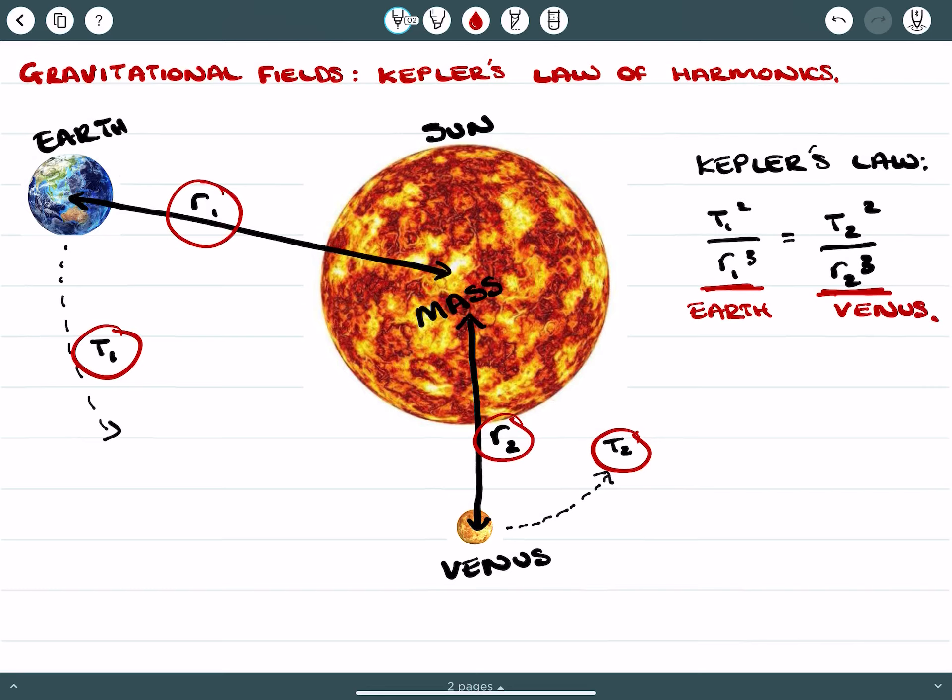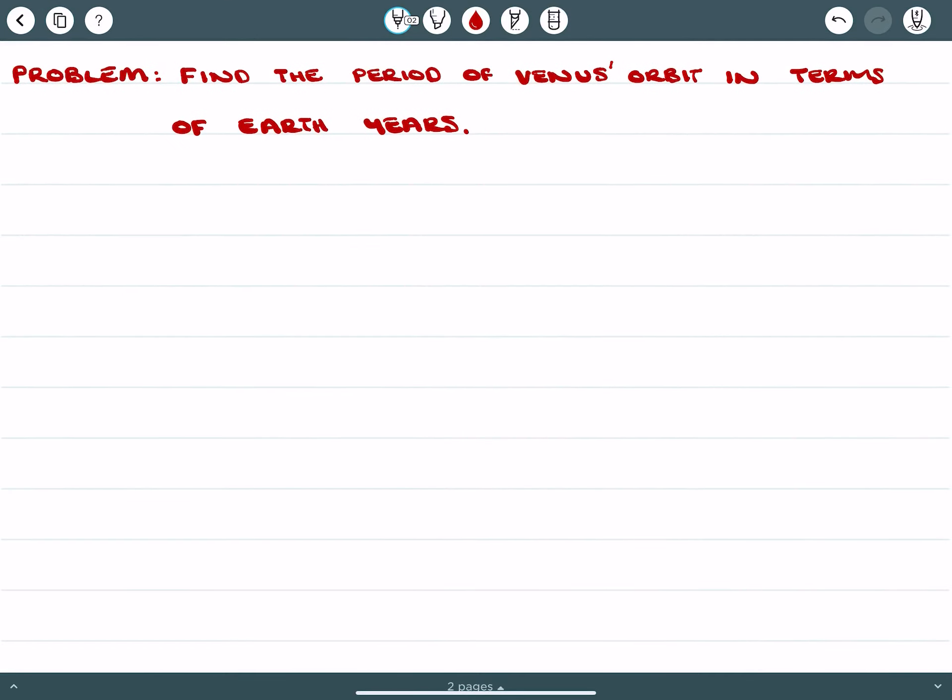We're going to try to find the period of Venus's orbit in terms of Earth years. First thing we need to know is the length of an Earth year, and we can just call it one year. It's quite reasonable for us to just put it as one year.